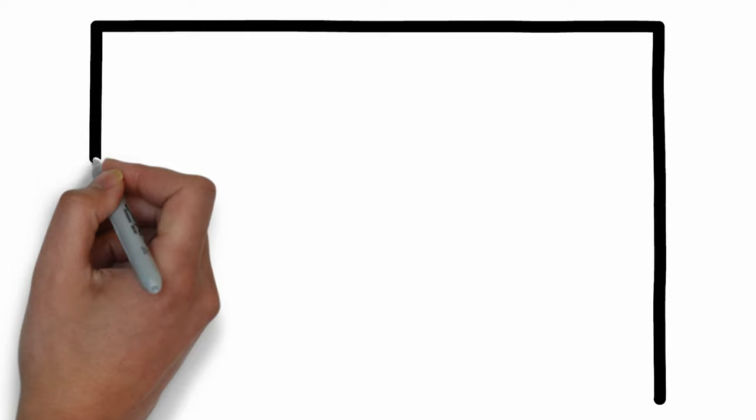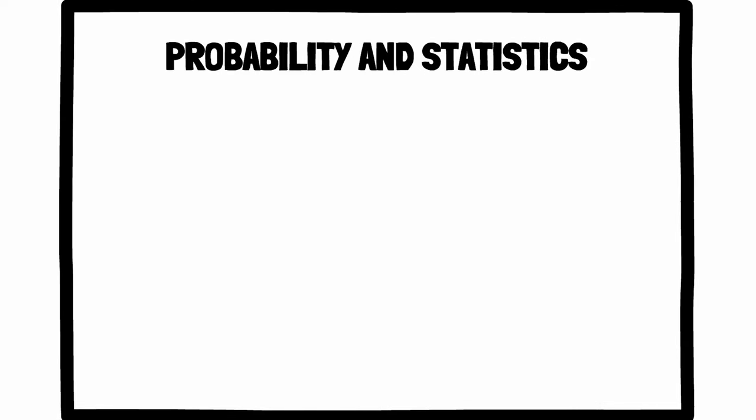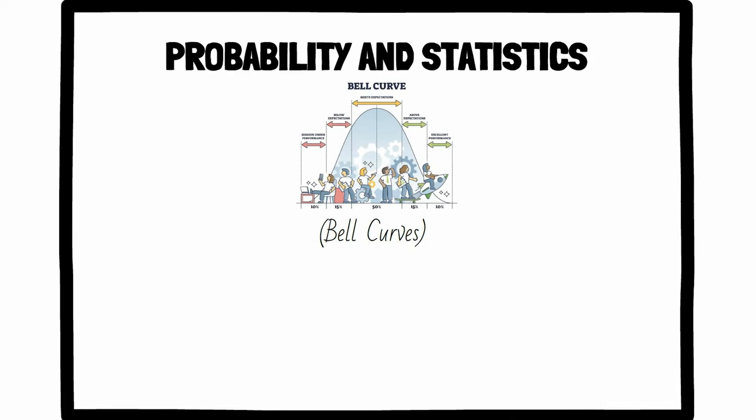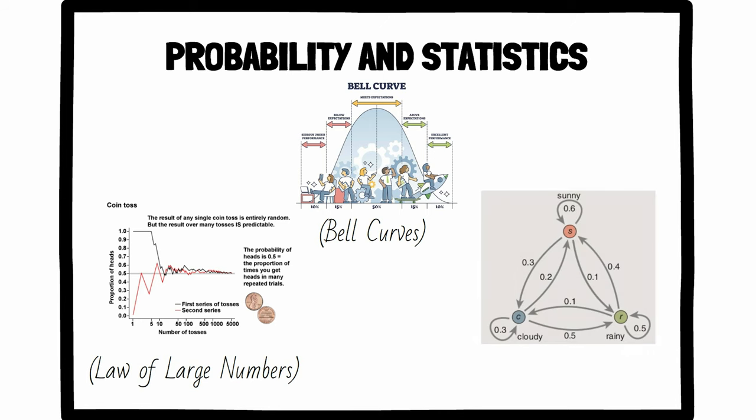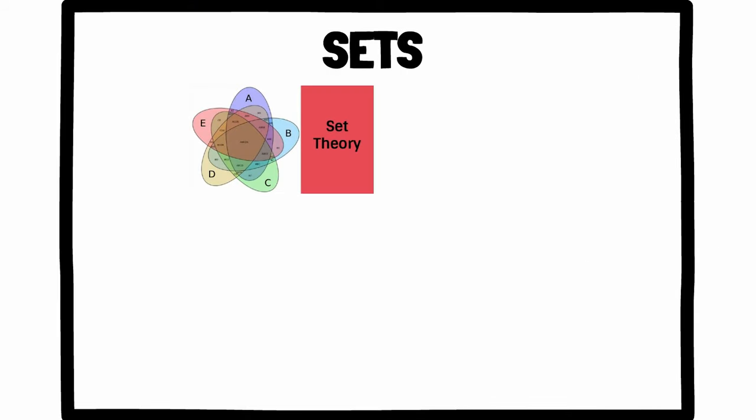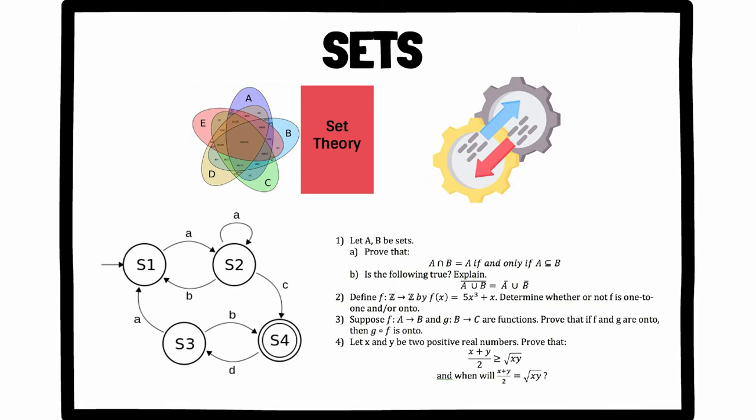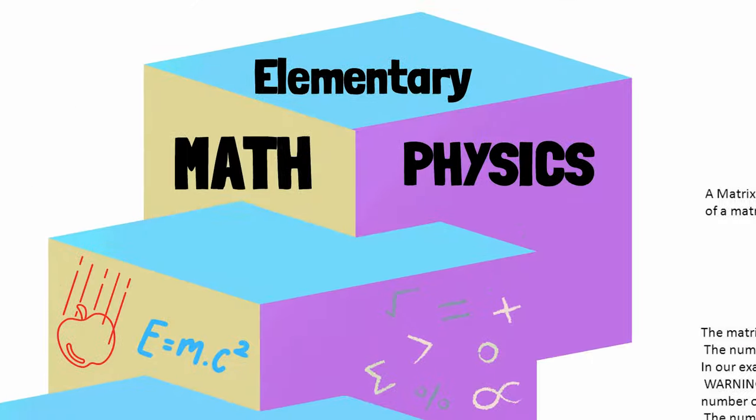You'll get that joke in a few months. Anyhow, probability and statistics is next, covering everything from basic bell curves to the law of large numbers and Markov chains. And finally, discrete math introduces you to sets, permutations, state machines, and challenging logical problems to prepare you for the engineering ahead. Nice!